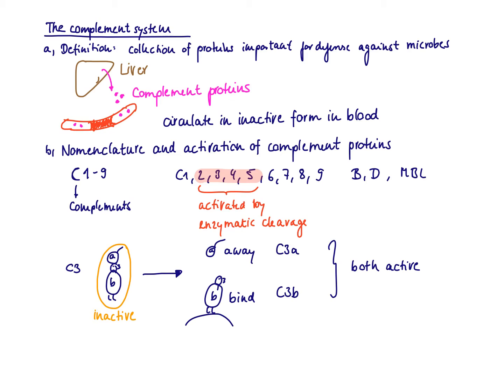Let's talk about the nomenclature and the activation of complement proteins. Most of the complement proteins are named with a C followed by a number — C for complement — so C1, C2, C3, until C9. There are a couple of others: Big B, Big D, and MBL, that are also complement proteins.